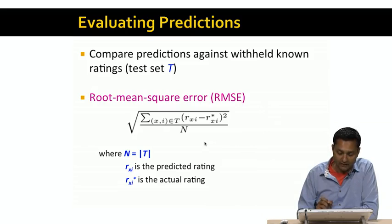And it's very simply defined as the sum of the squares of the deviations from the actual ratings and the predicted ratings. So in this case, R Xi star is the actual rating for user X and item I. R Xi is the rating that's predicted by our algorithm.